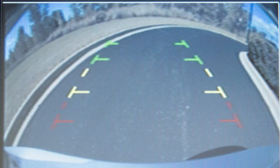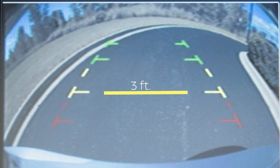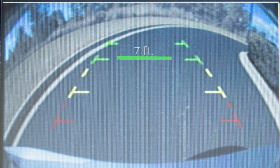The front and rear views display the approximate distance between an object and your vehicle with colored lines. The red line designates an object is approximately 1.5 feet away. The yellow line designates an object is approximately 3 feet away. The first green line designates an object is approximately 7 feet away.